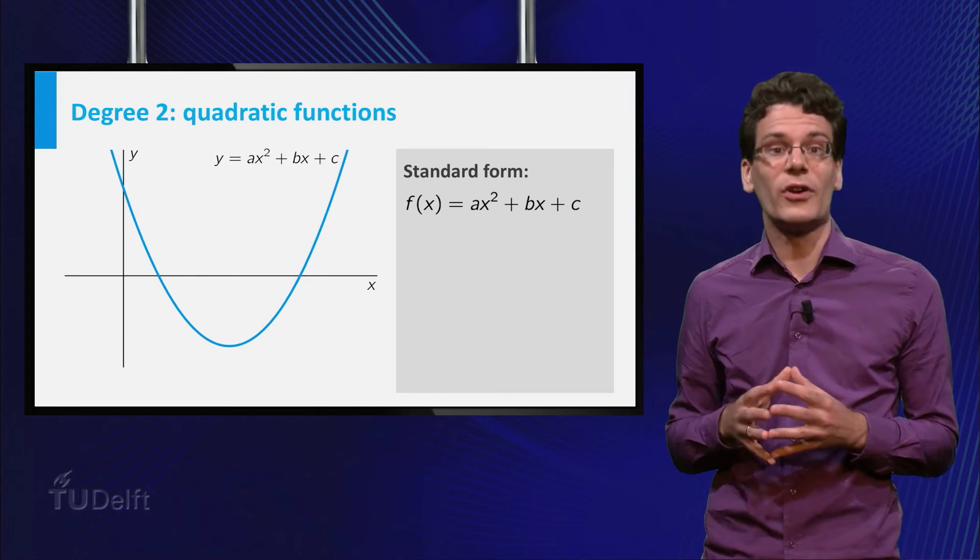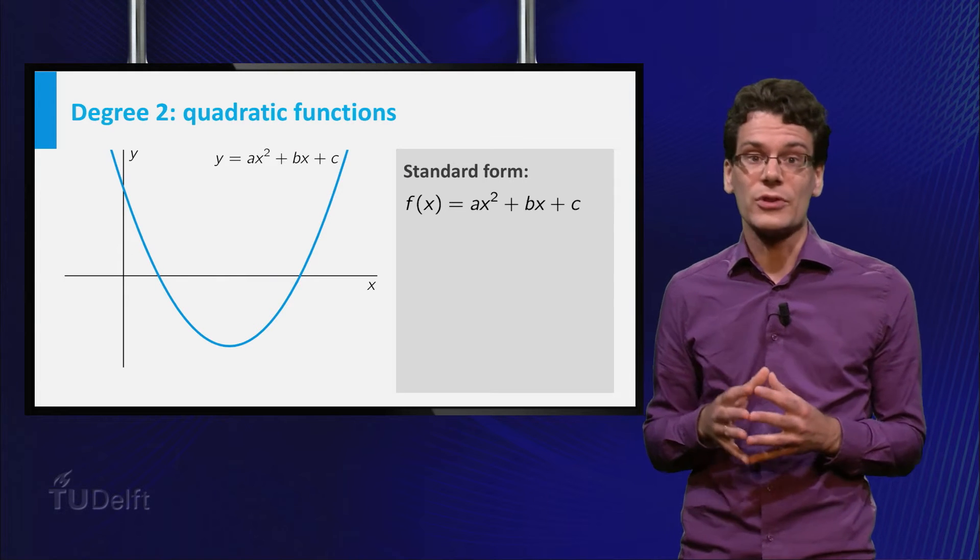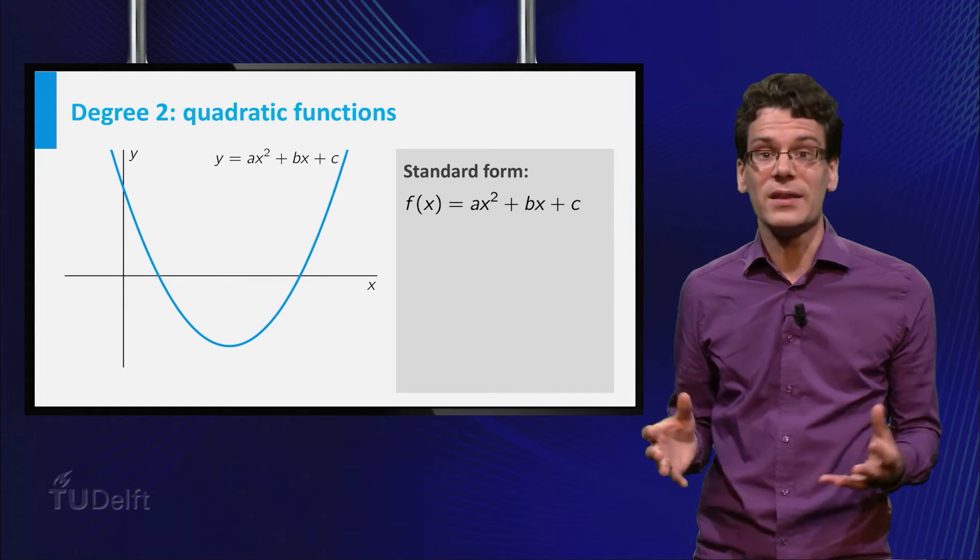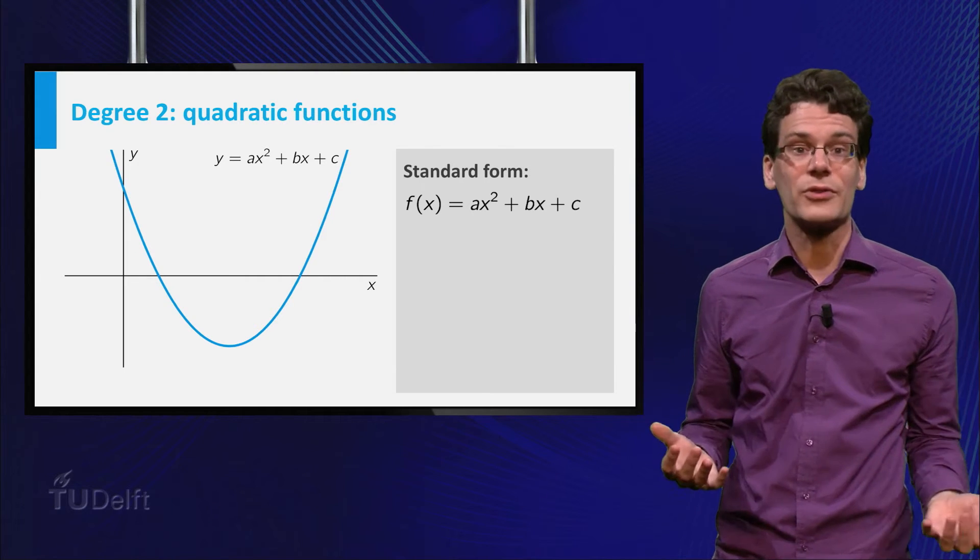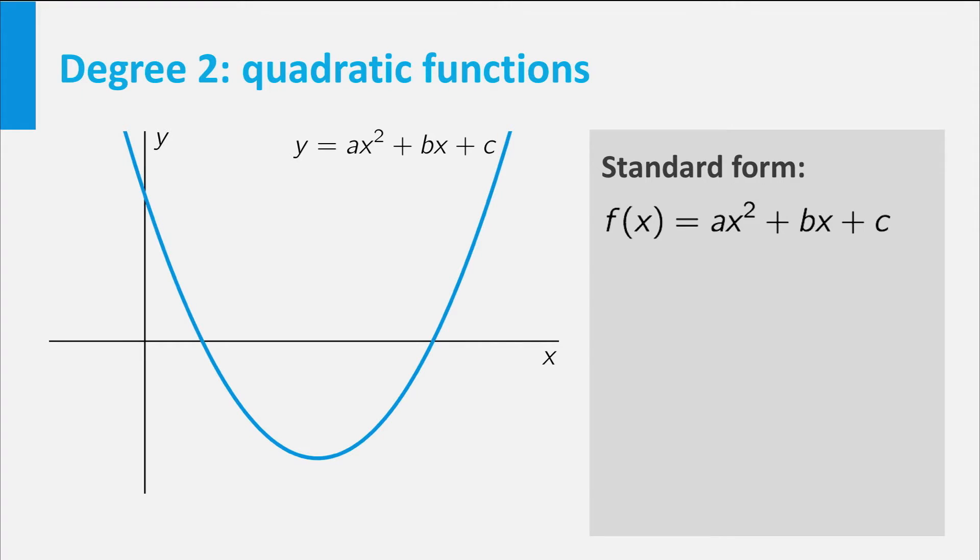The standard form of a quadratic function is f of x equals a times x squared plus b times x plus c, where a, b and c are numbers. Let's have a look at the graph of such functions. The shape of the graph of any quadratic function is a parabola. It has precisely one extremum, called the vertex, and it is symmetric in the vertical line through this vertex.